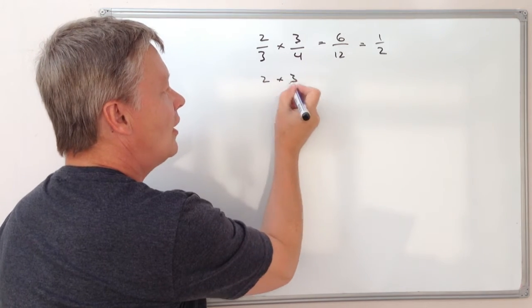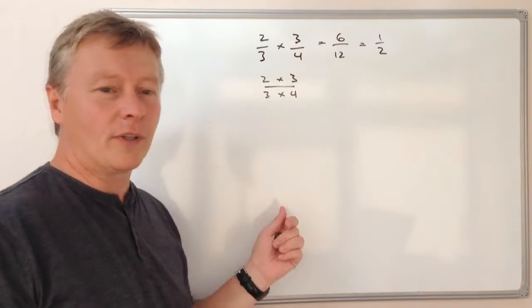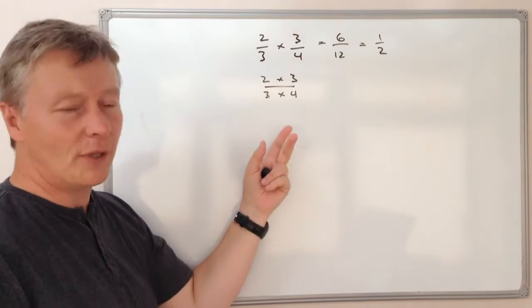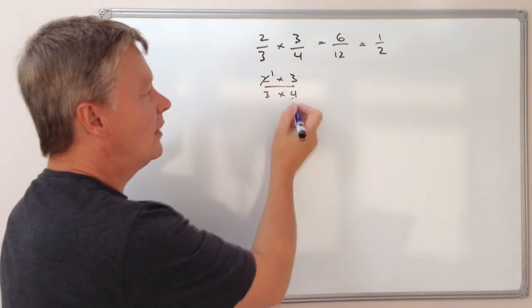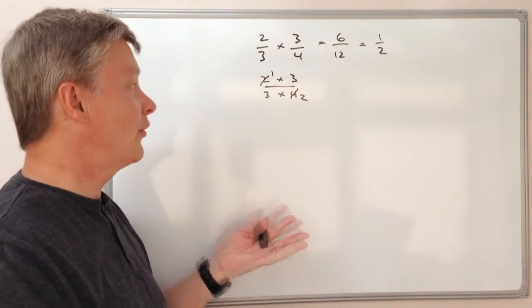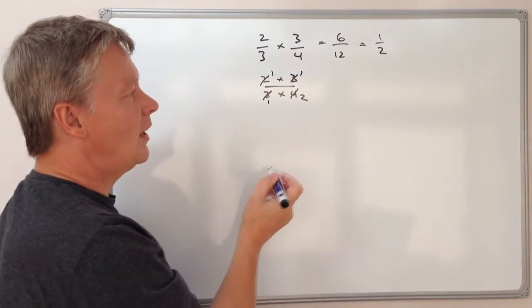So if I just rewrite that slightly as that, what I'm going to do is divide the top by 2, and if I divide the top by 2, I'm going to divide the bottom by 2. So top by 2, that would become 1, and that would become 2. Now I'm going to divide the top by 3 and the bottom by 3. So that's going to become 1, and that's going to become 1 as well.